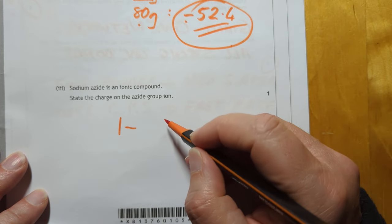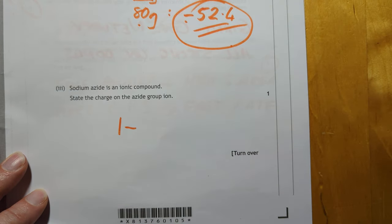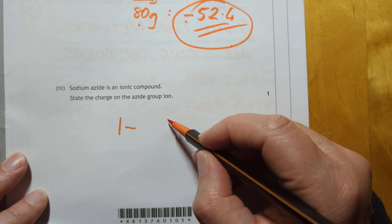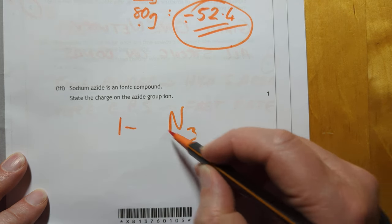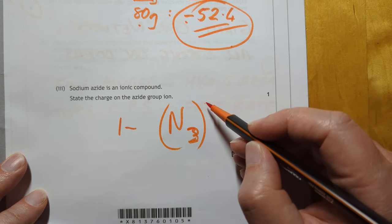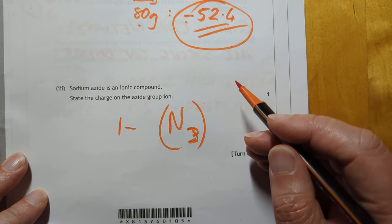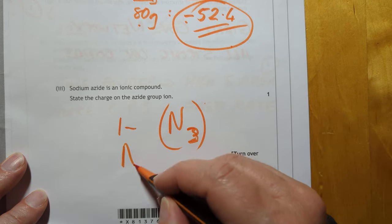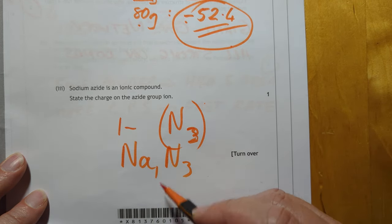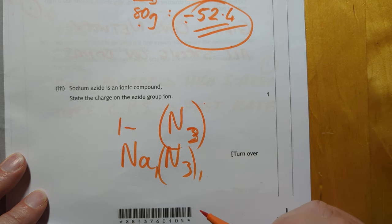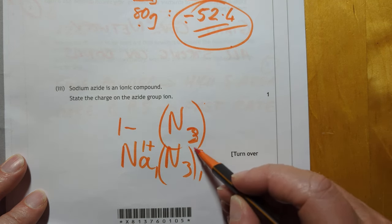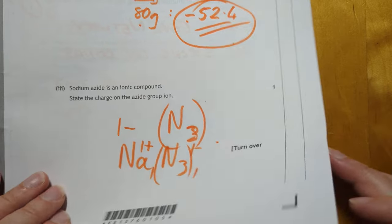This is an interesting one. I'd love to see the markers report on this one. N3. They are sort of assuming that you realize that's the azide group. Or maybe they've said that and I've missed it. And because it's NA N3, there's one of these for every one of these. So, this is one plus. That must be one minus. Tricky one, that one, actually, I think.